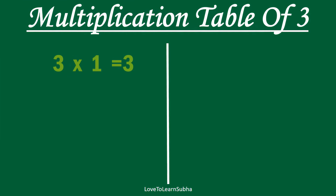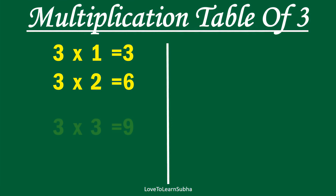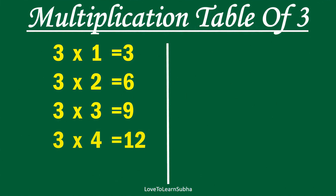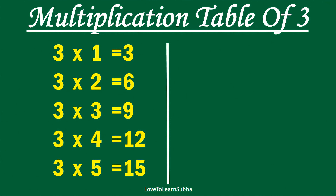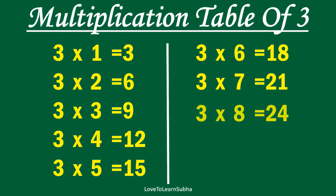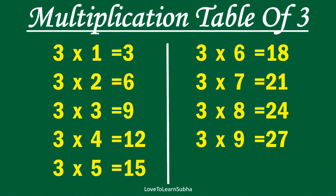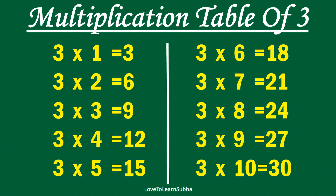Multiplication table of 3. 3×1 is 3, 3×2 is 6, 3×3 is 9, 3×4 is 12, 3×5 is 15, 3×6 is 18, 3×7 is 21, 3×8 is 24, 3×9 is 27, 3×10 is 30.